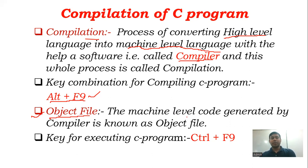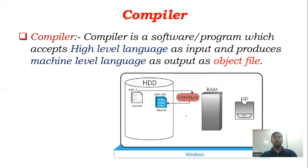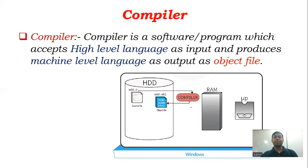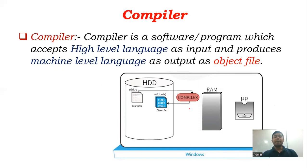The compiler helps with the compilation process, which takes high-level language as an input and produces machine-level code, also called object code, as an output.